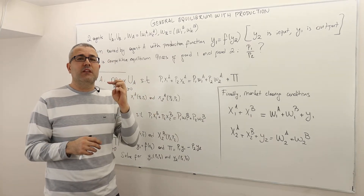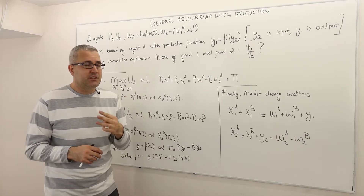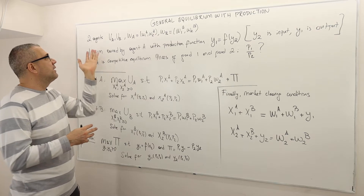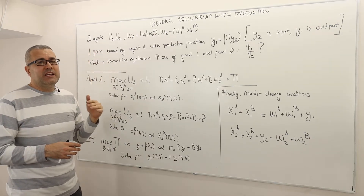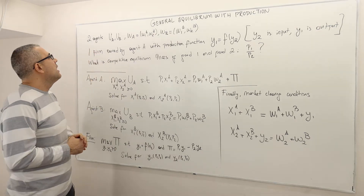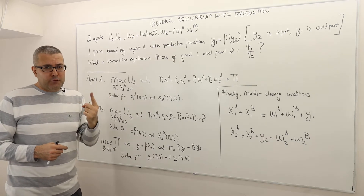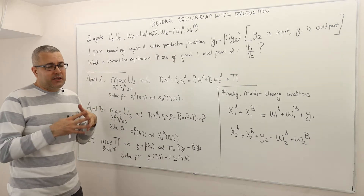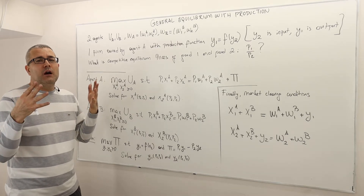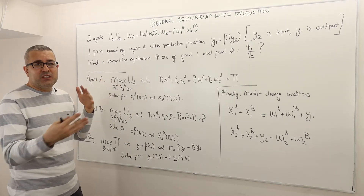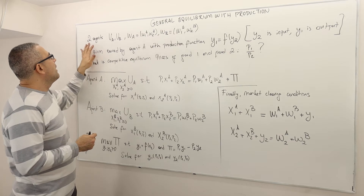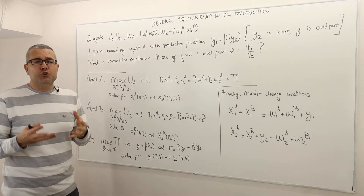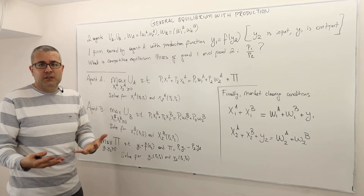There are three types of agents — that's important. I'm going to call two of them agents and the other one a firm. For simplicity, there's one firm, but you can think of there being hundreds of firms with exactly the same production technology. And then two agents: the agents are like consumers, and the firm is obviously the producer.